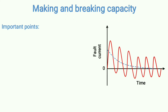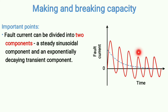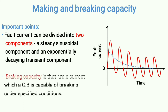Whenever a fault happens, the fault current can be divided into two components: a steady sinusoidal component and an exponentially decaying transient component. As you can see in this figure, the blue dotted line represents the exponentially decaying transient component. Due to the presence of this decaying component, the fault current becomes asymmetrical in nature. But as time goes on, this component gets reduced and after some time the fault current again becomes symmetrical.